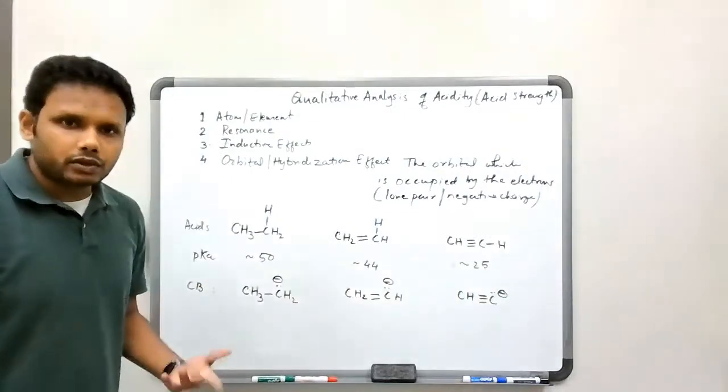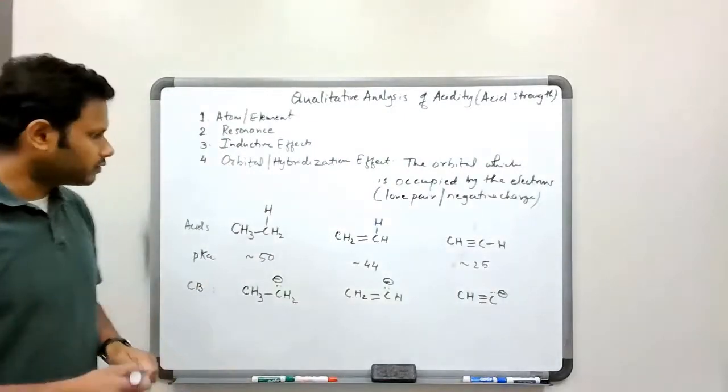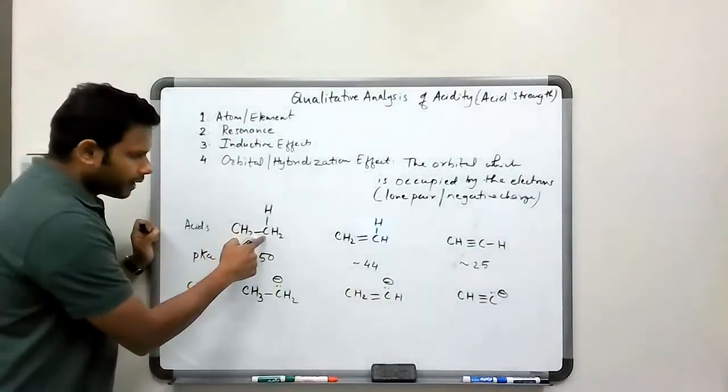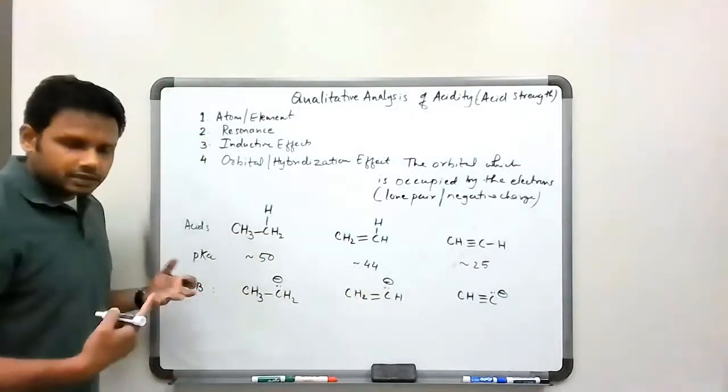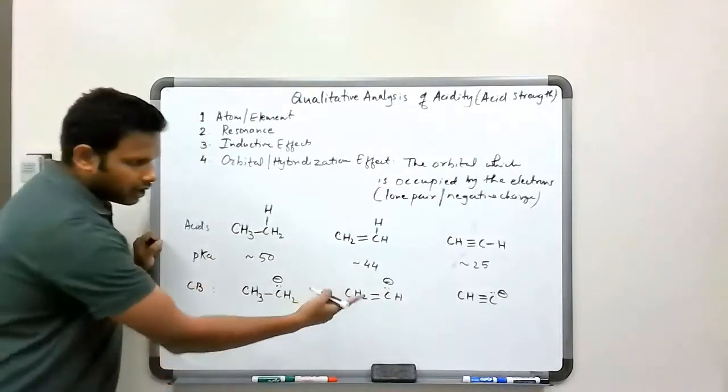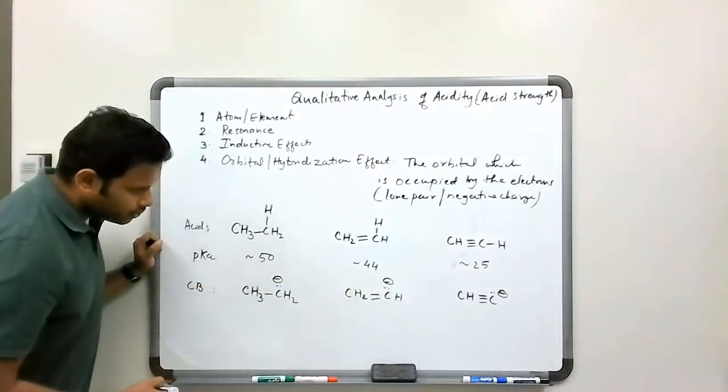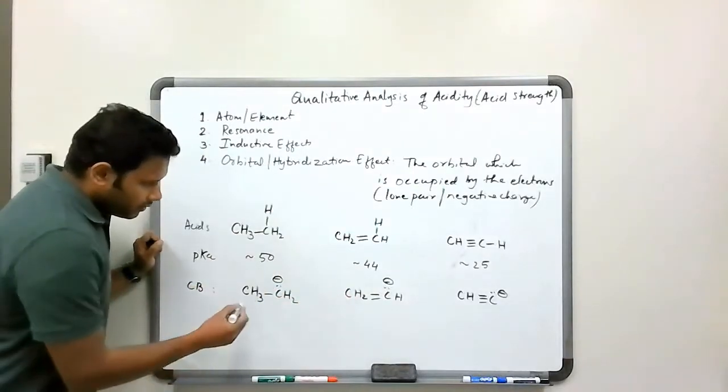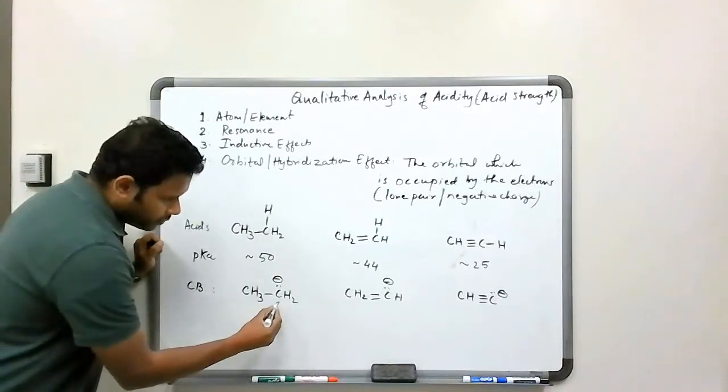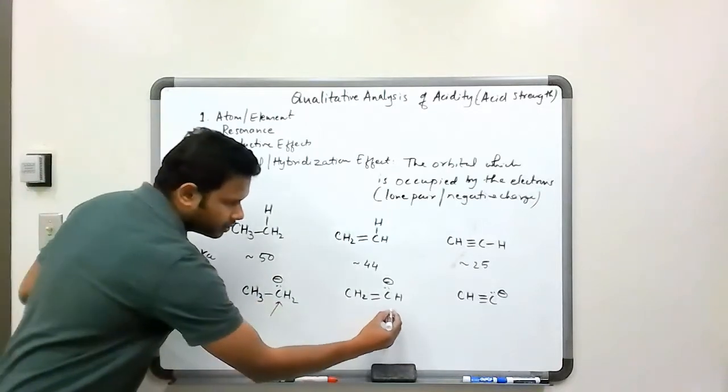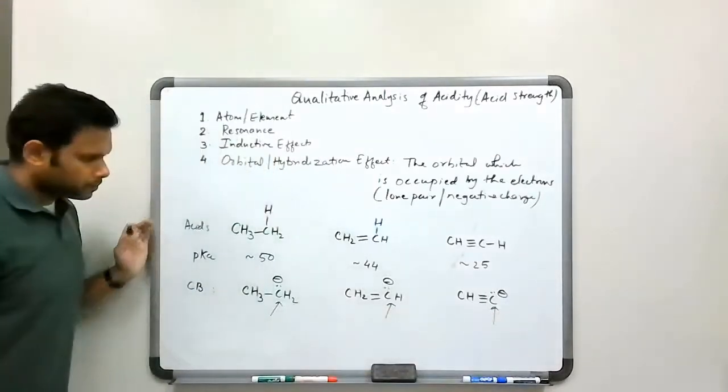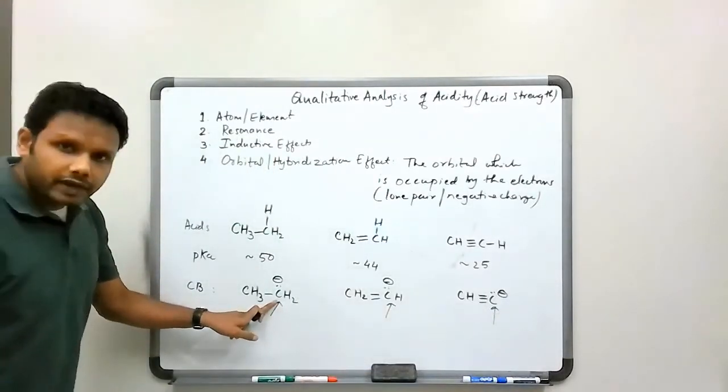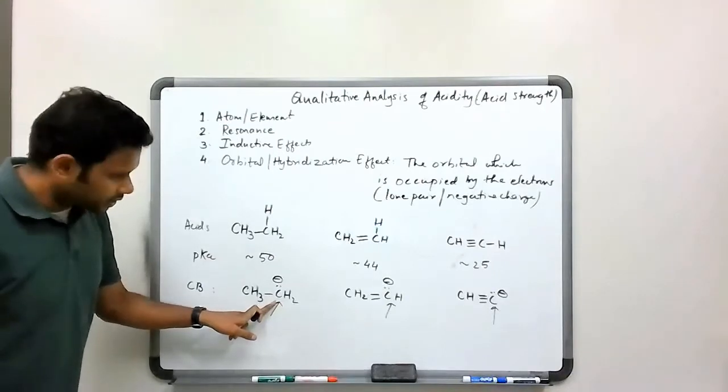Now let's talk about where this lone pair is present, or the electron pair is present, in each of these molecules. Which orbital does it occupy? How do I know that? How do I figure that out? You can go back to your parent acid. You could also do it here. Honestly, it doesn't matter. You could just do it here on the conjugate base. Maybe that is better. Let's just do it on the conjugate base.